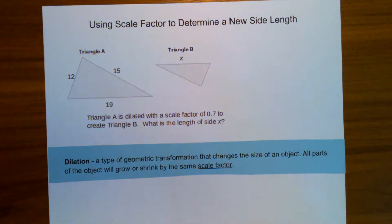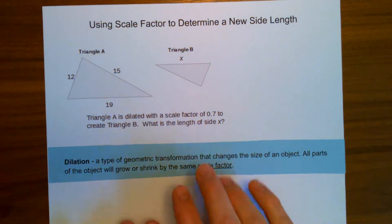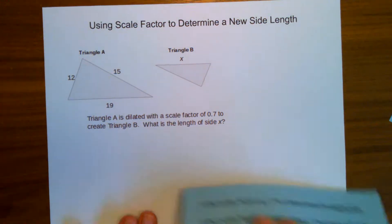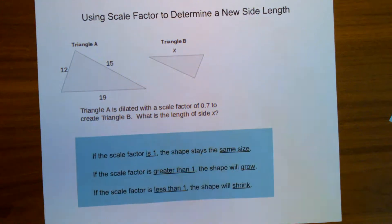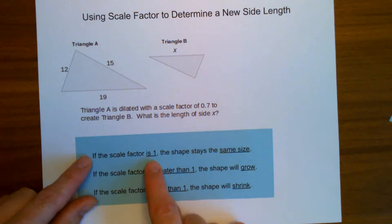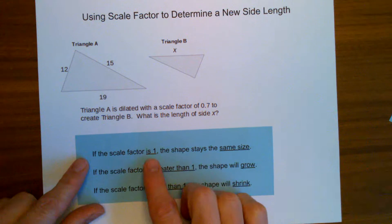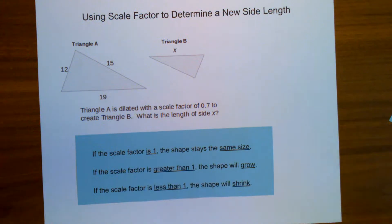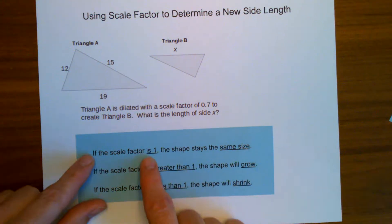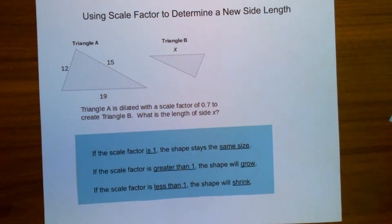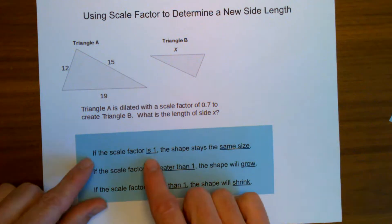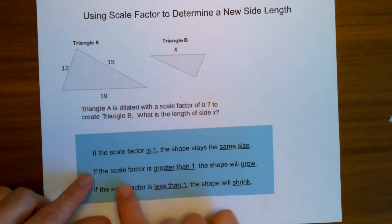But it says all parts of the triangle will either shrink or grow by the same scale factor. So dilations can sometimes cause it to shrink, as in this case, or to grow. But everything needs to grow or shrink by the same scale factor. And what does the scale factor mean? So the scale factor is what you're multiplying by. If the scale factor is 1, the shape is going to stay the same size. Multiplying something by 1 doesn't change the quantity of that number. So if the scale factor is 1, that's kind of a boring dilation, the shape will stay the same size.